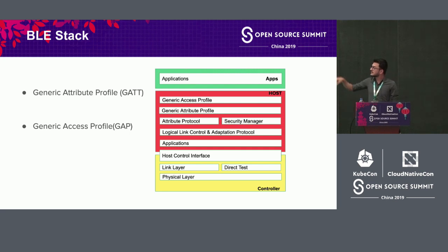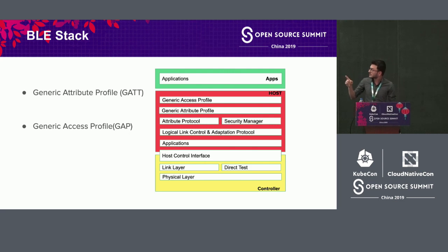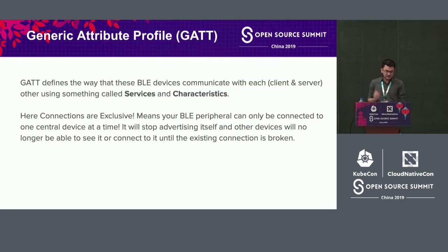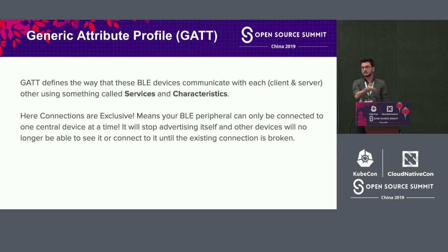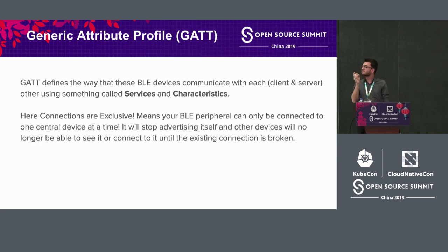To do that, we need to understand the BLE stack. In BLE, there are two really important things to remember: Generic Attribute Profile (GATT) and Generic Access Profile (GAP). GATT defines the way BLE devices communicate with each other — the client and the server. The client could be your fitness tracker and the server could be the mobile application. They communicate using something called services and characteristics — remember these terms.